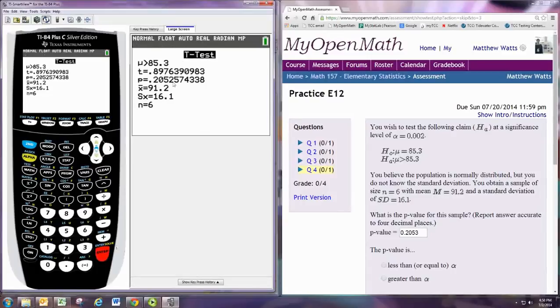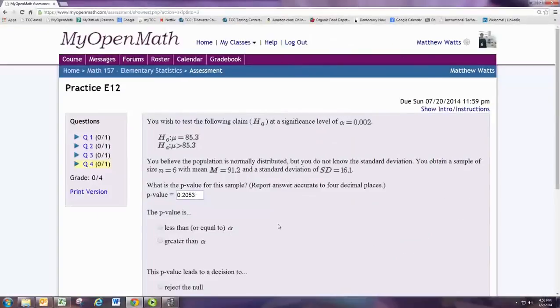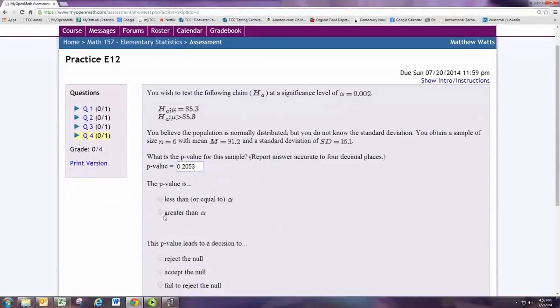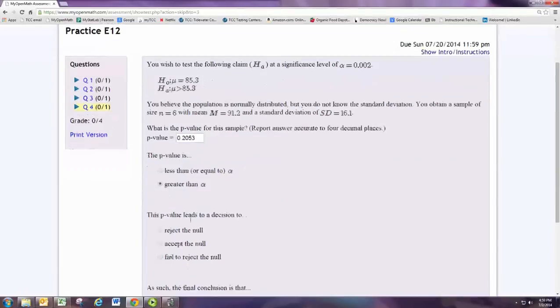And we get the same p-value rounded to four decimal places. Comparing with alpha, we see that the p-value is greater than alpha. When the p-value is greater than alpha, we fail to reject the null hypothesis.